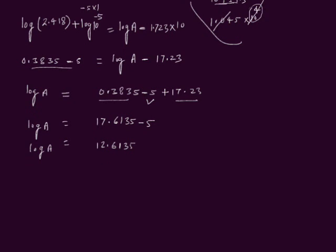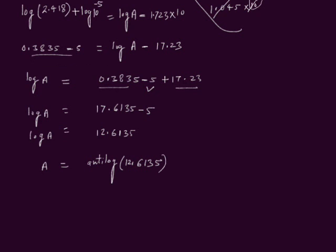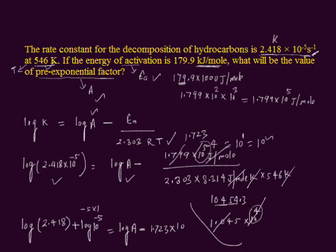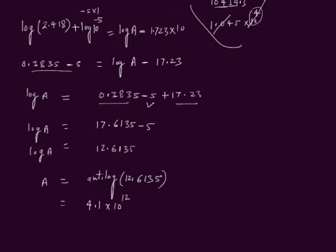Transferring log to the right side: A = antilog(12.6135). Antilog of 12.6135 is a quite large value, written in scientific notation as 4.1 × 10¹². The unit of the rate constant is per second, so the unit of the pre-exponential factor A will also be per second. This is the value of the pre-exponential factor.